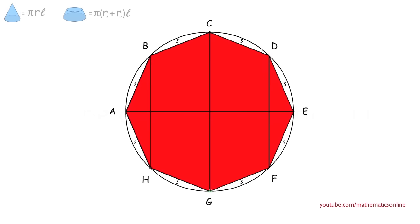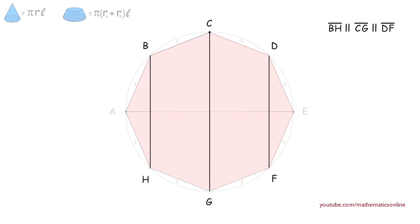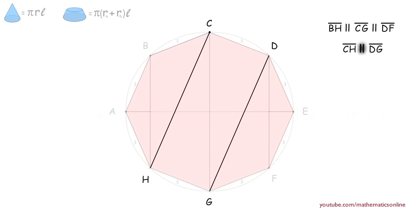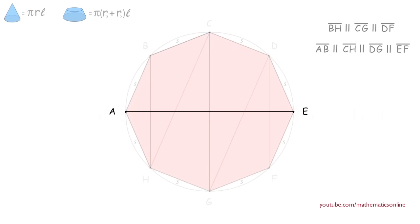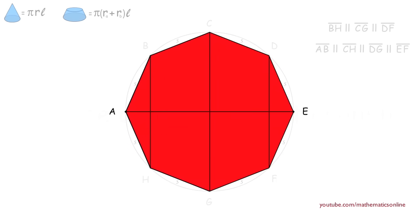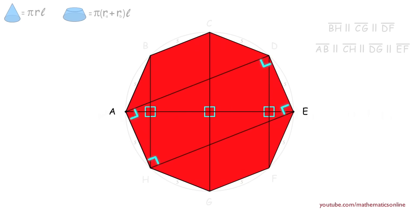Next, we need to point out some unique properties related to an even-sided equilateral polygon. First, the vertical lines that connect the opposite vertices are parallel. And the same is true if we connect points CH and DG, which are parallel with lines AB and EF. Another property is that the horizontal line AE intersects the vertical lines at right angles, and there are multiple diagonals that form right angles with the sides of the polygon.